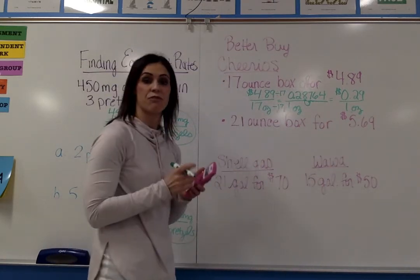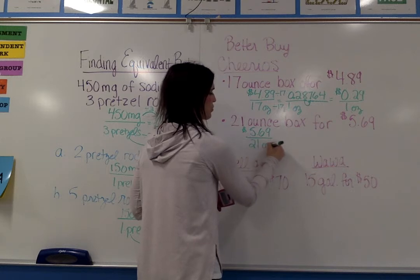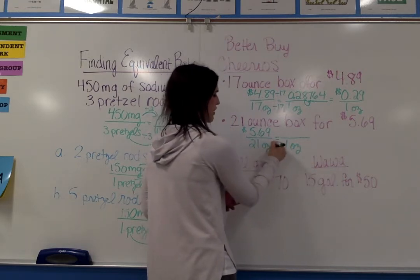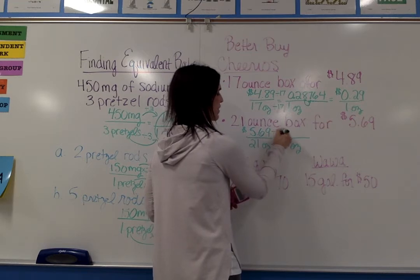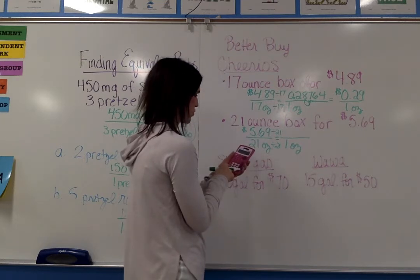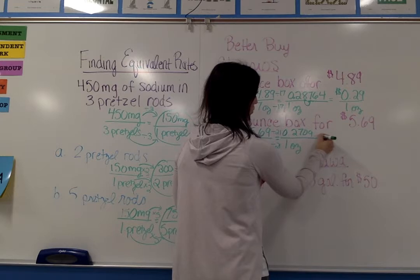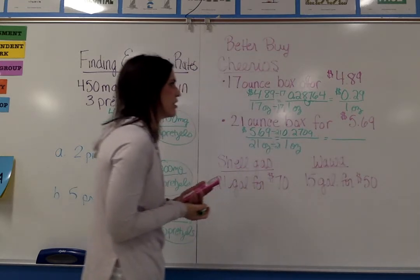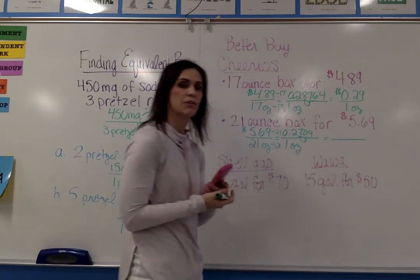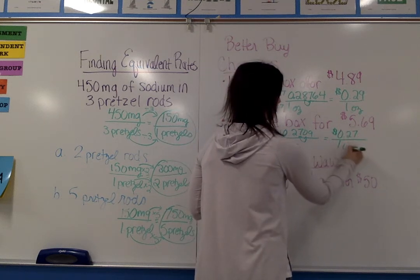Now I do the same for the 21-ounce box. If I pay $5.69 for 21 ounces (oz is the abbreviation for ounces), I want to find the cost for one ounce. 21 divided by 21 gives me one, so I divide the numerator by the same value. On my calculator, 5.69 divided by 21 gives a non-terminating decimal. Rounding to the nearest hundredths: the digit in the thousandths place is zero, which is less than five, so the seven stays the same — giving $0.27 for one ounce.